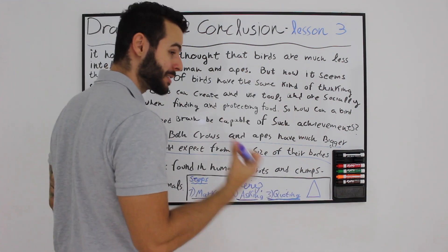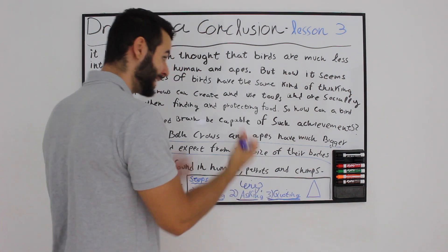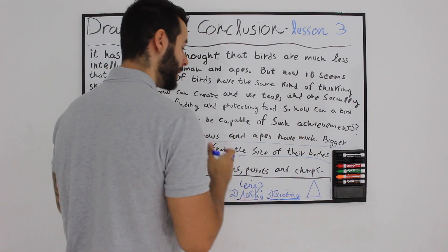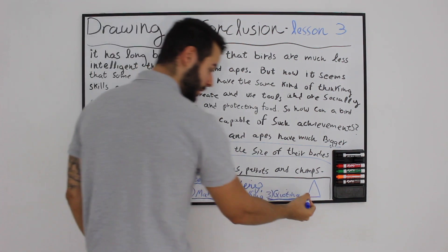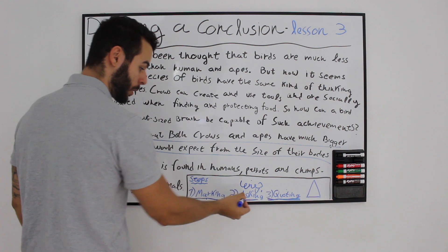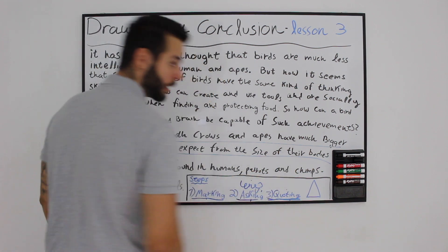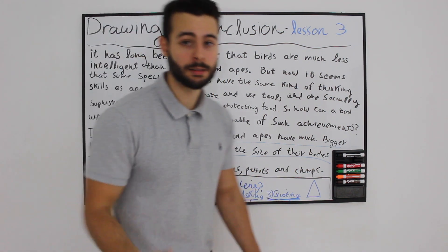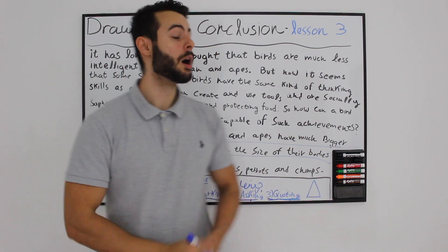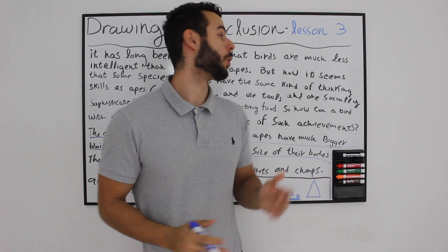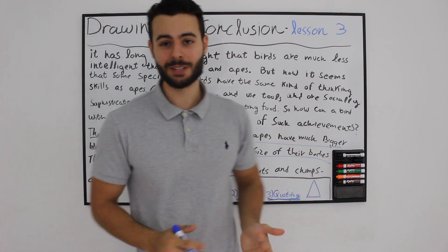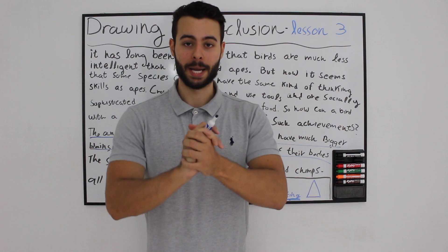Using the triangle method, which is one, mark, two, ask, three, quote, you can actually get the right answer each and every time. I hope this video helped you to actually draw a conclusion out of a draw a conclusion question. I will see you in the next lesson. Bye.